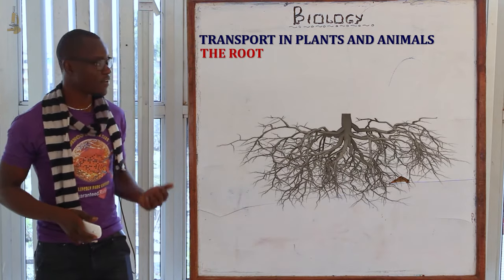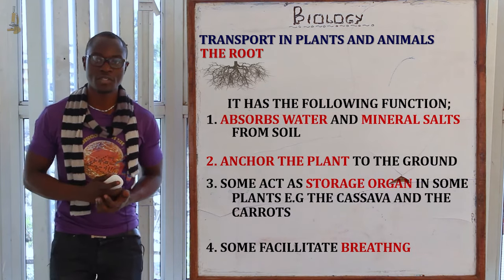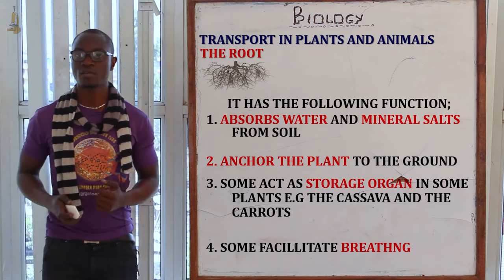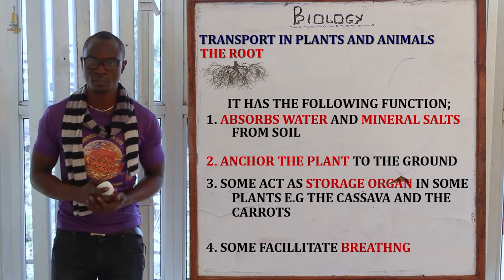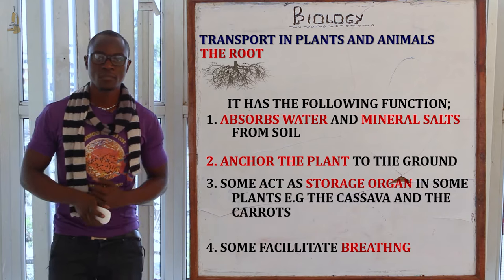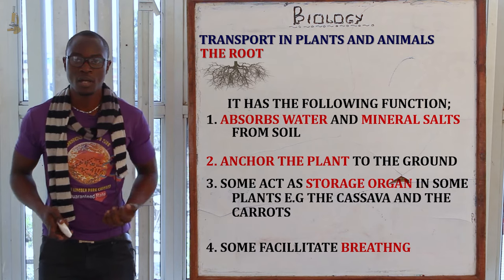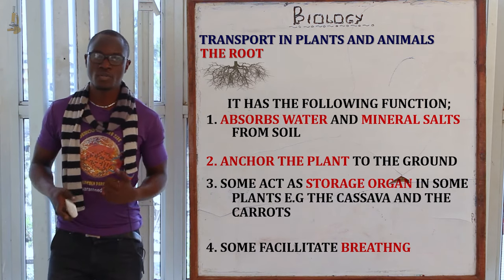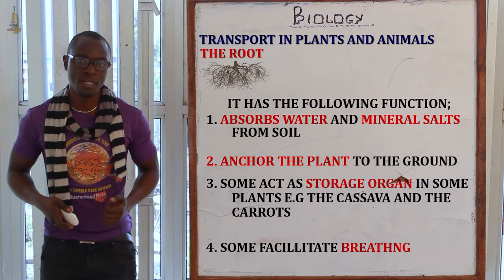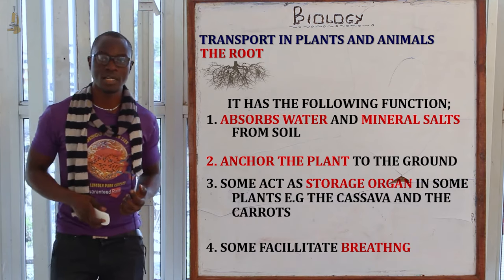The root has different functions. First, the root absorbs water and mineral salts from the soil and has root hairs which assist in doing this. The root also anchors the plant to the ground, providing support. In some plants, the root acts as a storage medium, for example cassava and carrot. Some roots also assist in breathing — we have breathing roots mainly located in some aquatic plants.